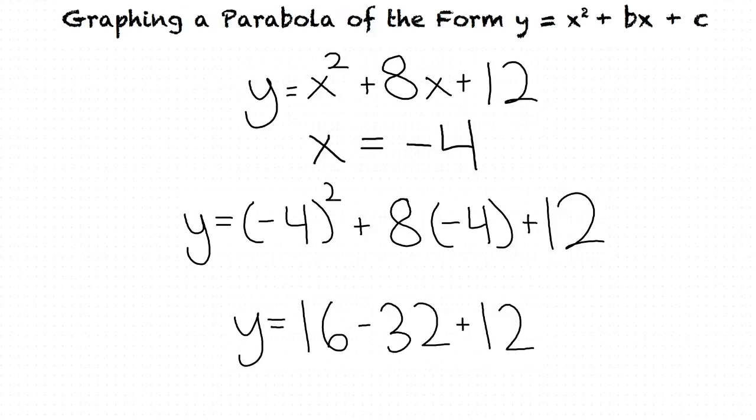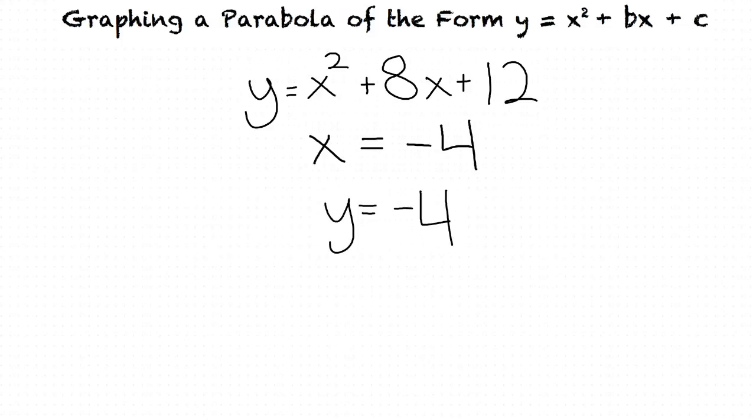Which, when simplified down, results in our y value of negative 4. This means that our vertex is negative 4 comma negative 4.